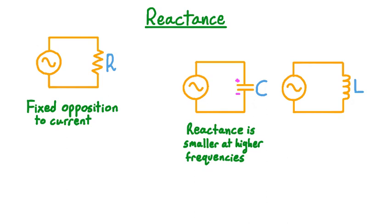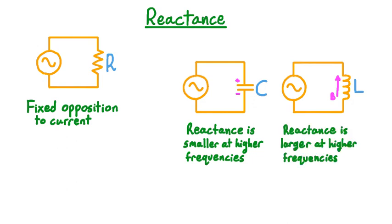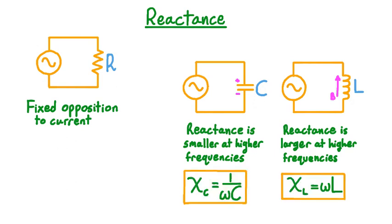An inductor, on the other hand, builds up a magnetic field, and the stronger the magnetic field gets, the less the inductor opposes current. However, this magnetic field takes time to build up, so the higher the frequency of the electromotive force, the weaker the magnetic field will be before changing directions. As a result, the inductive reactance will be larger at higher frequencies.